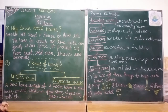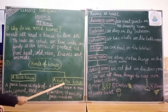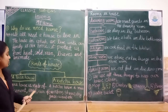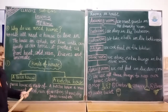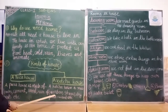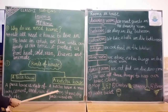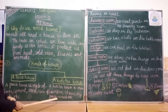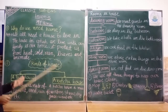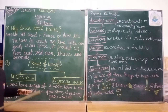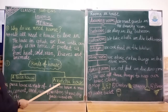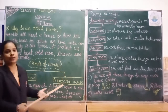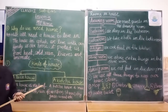A kaccha house is also called a hut. A kaccha house is made of bamboo and dry grass. That is why we call it a kaccha house. Hut means a kaccha house.